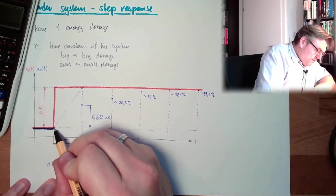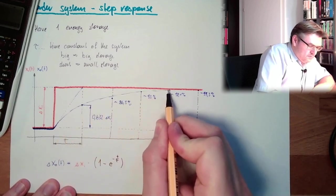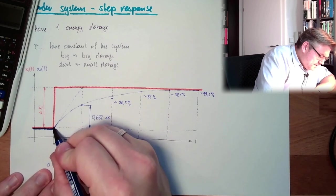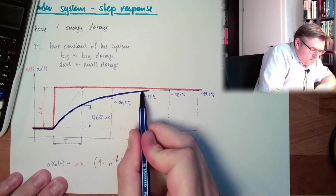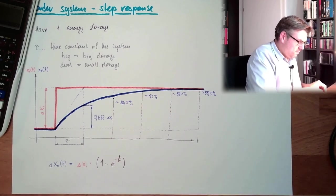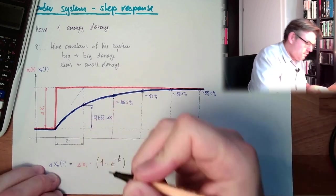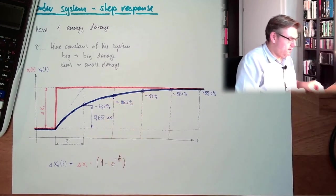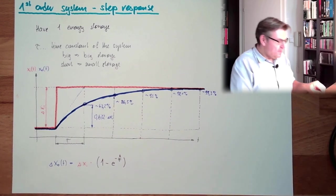And it looks like that, we will start to raise with this, and then we will smooth down. So, this is a typical... Here we have 63.2%. After 5 tau, everything is finished. This is the step response, here we have a bend.